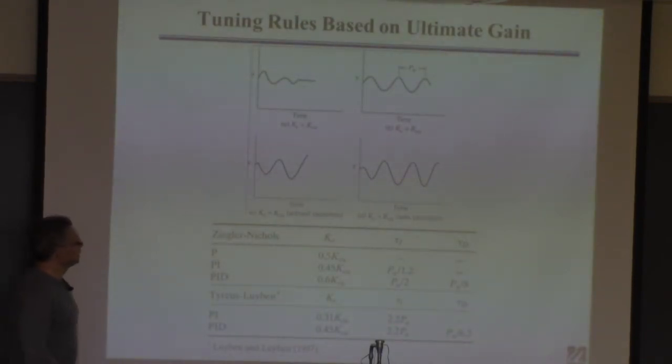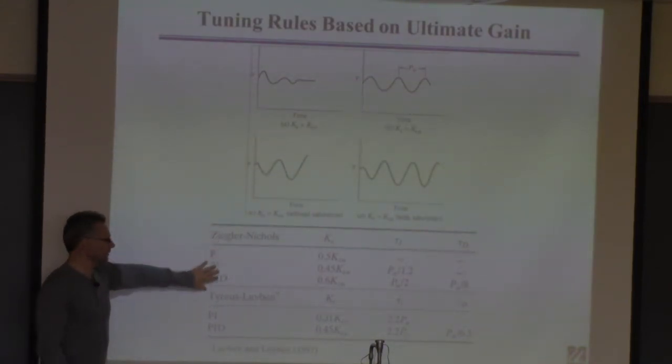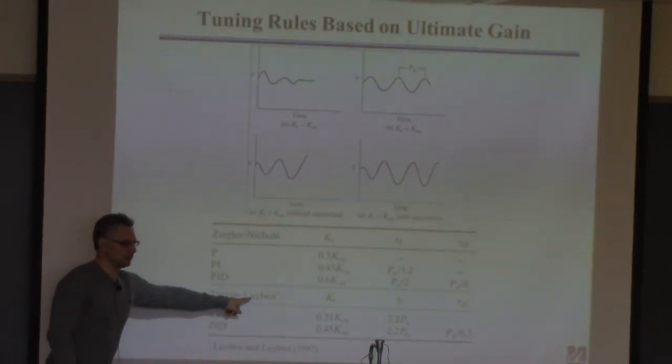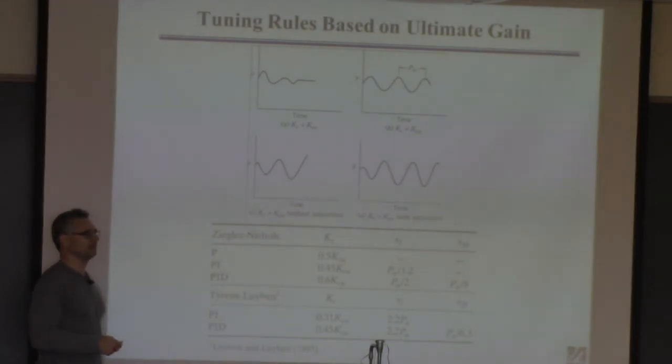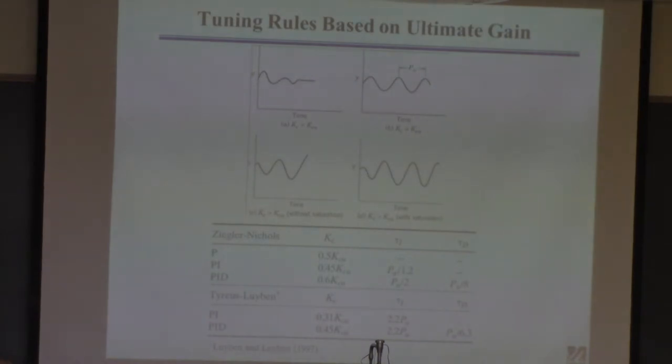If I say Ziegler-Nichols tuning parameters, use these formulas. And if I say these guys' names, Bjorn Tyrius and this is Little Liban. Big Liban is a professor at Lehigh. Little Liban is a guy at DuPont. That's his son. That would be really weird to have two people in your family that were control people. It's like, you want to come over for Thanksgiving? Nah, I don't. Maybe not this year. So, again, these are plug-and-chug kind of formulas here. Liban and Liban, they even write papers together.